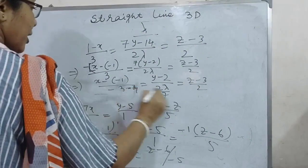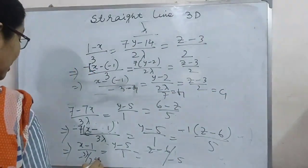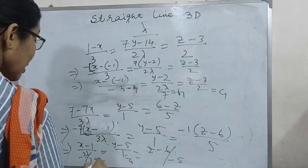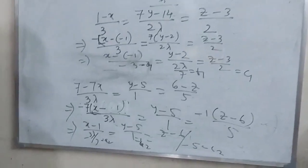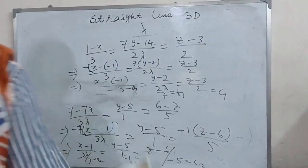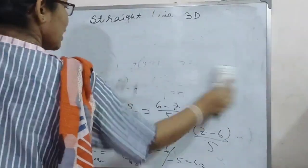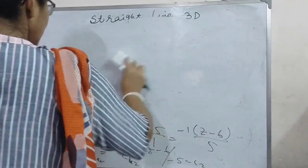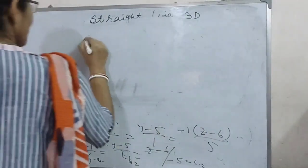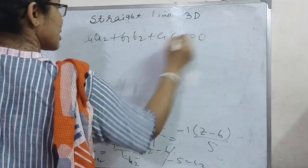Here, the direction ratios are identified as: a1 = minus 3, b1 = 2 lambda, c1 = 2 for the first line, and a2 = minus 3 lambda/7, b2 = 1, c2 = minus 5 for the second line. By the condition of orthogonality: a1·a2 + b1·b2 + c1·c2 = 0.